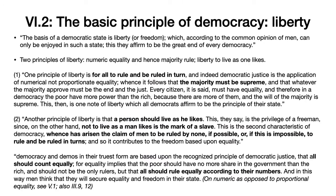After discussing those possibilities and the way these can be combined, we now want to know what the basic principle of democracy is — what makes a democracy democratic, what is common to all democracies. Aristotle says in chapter 2 the answer is liberty. The basis of a democratic state is liberty or freedom — eleutheria in Greek — which according to common opinion can only be enjoyed in such a state.